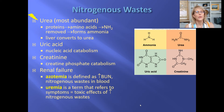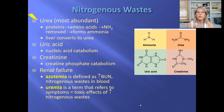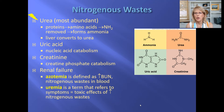So we left off here. We are talking about the nitrogenous waste, and we learned that there were four of them: ammonia, urea, uric acid, and creatinine.